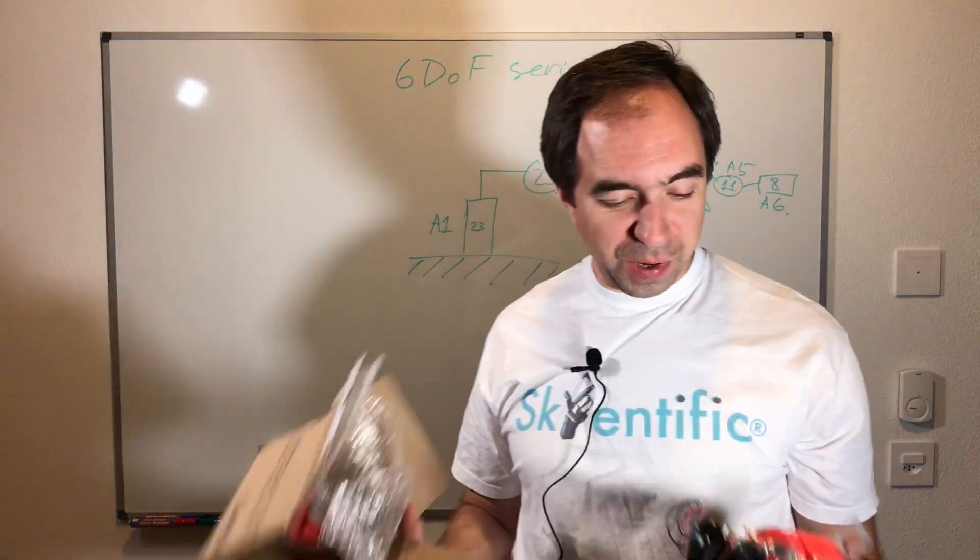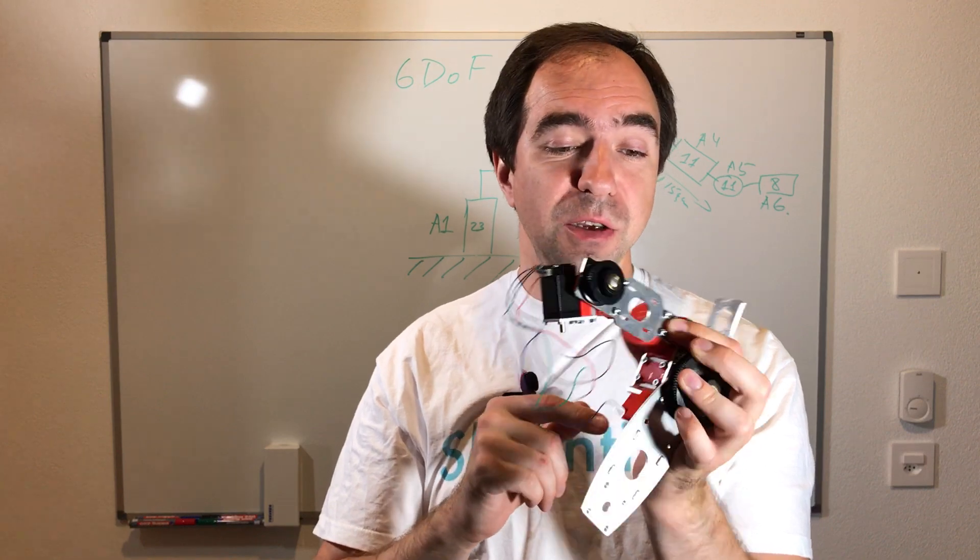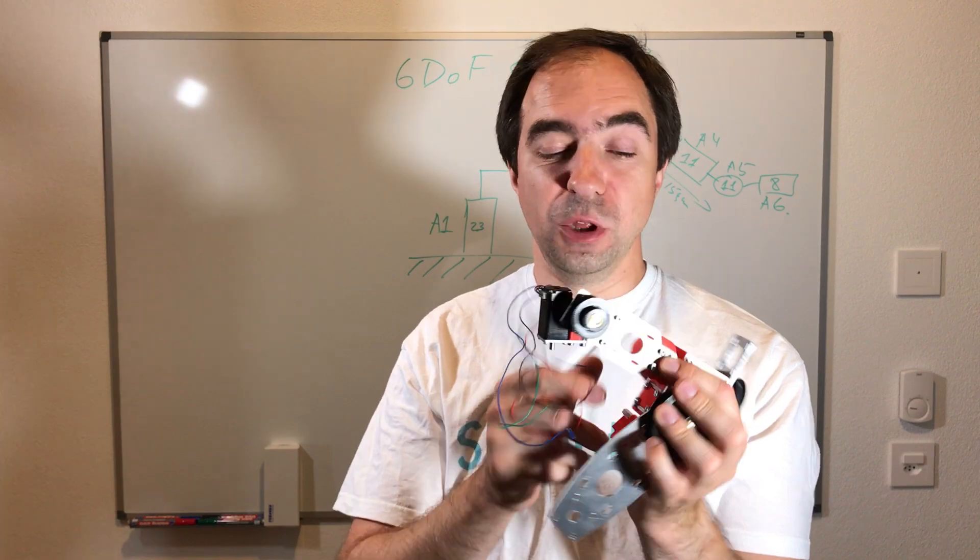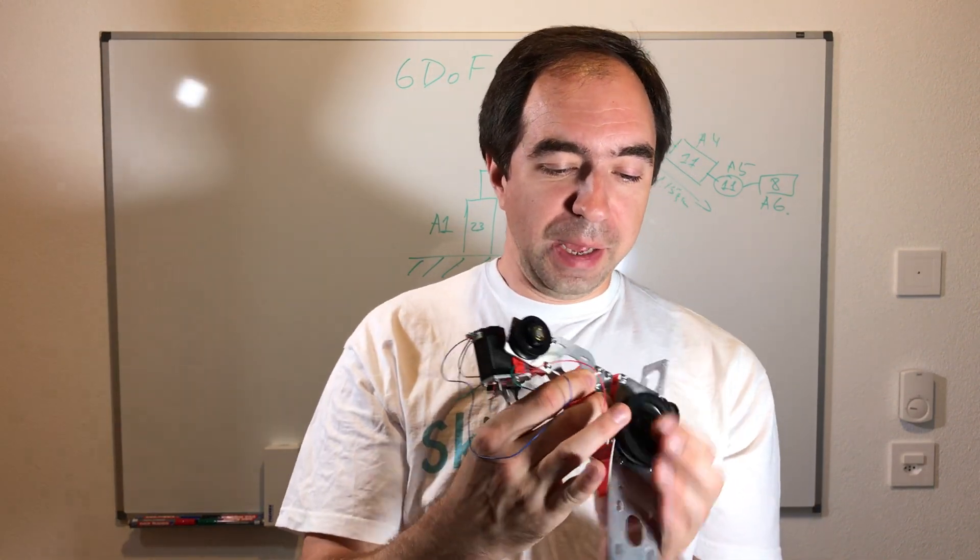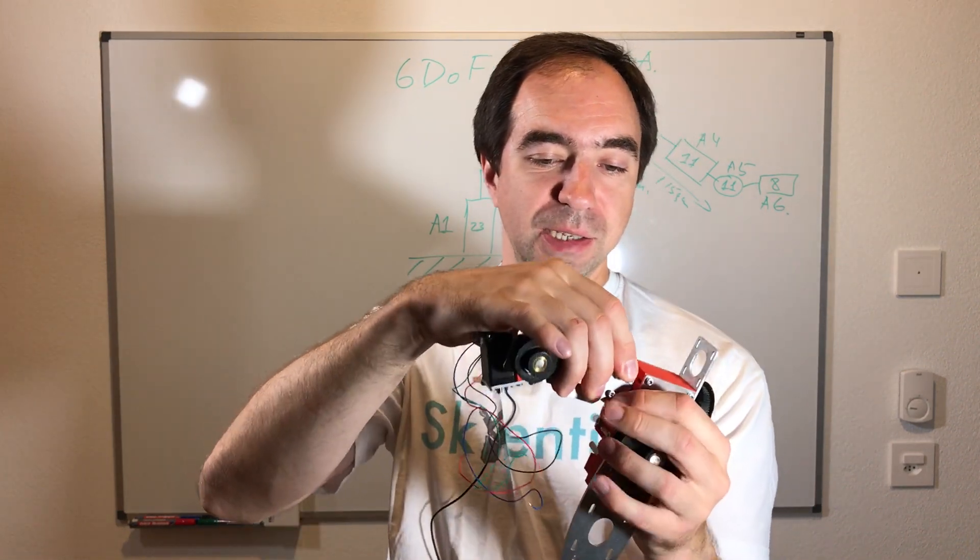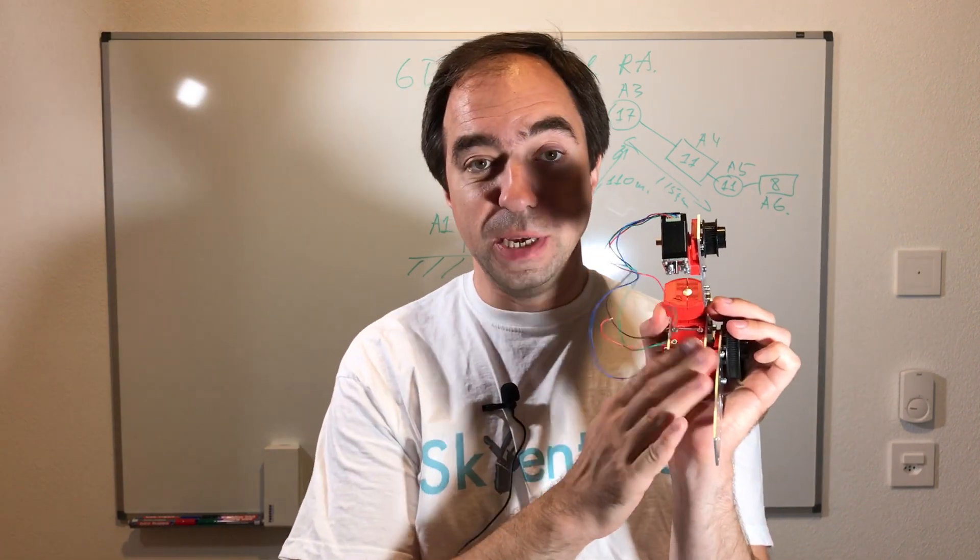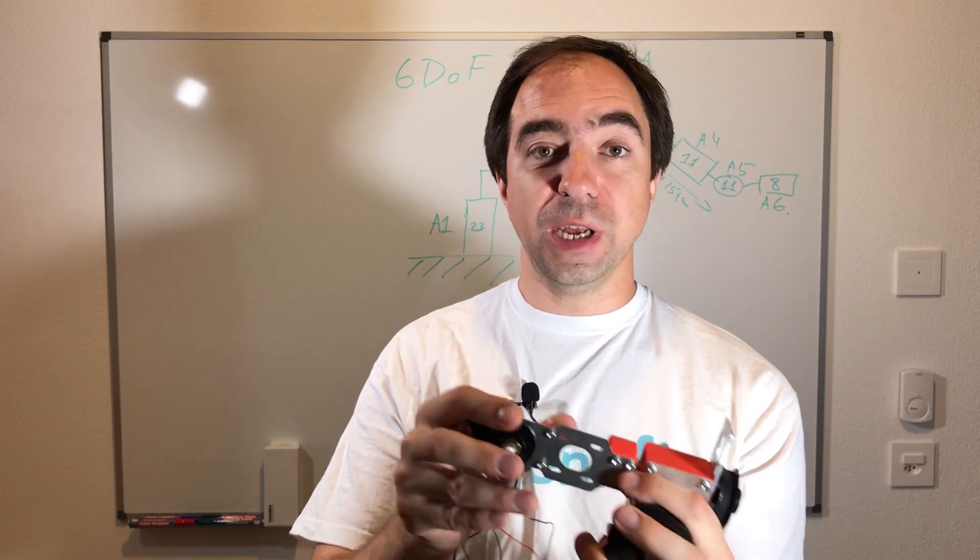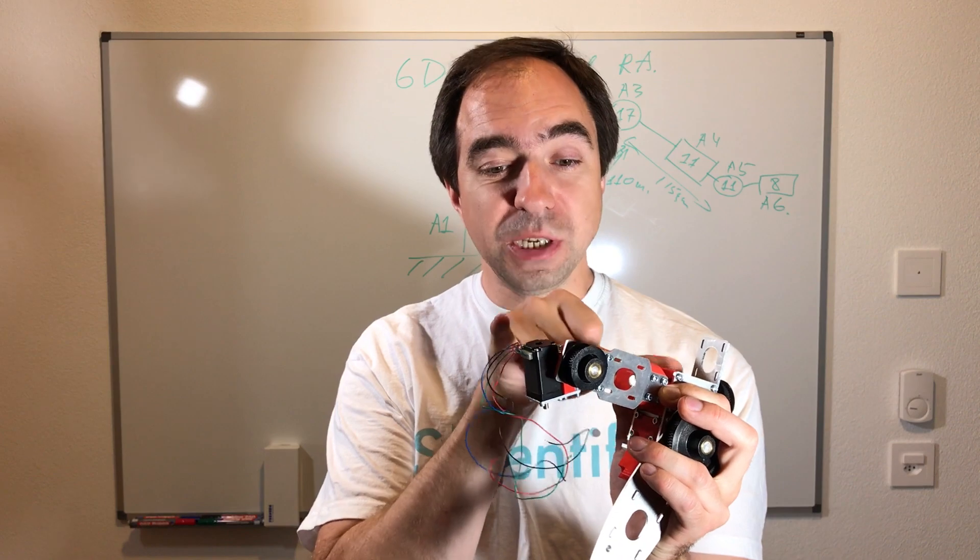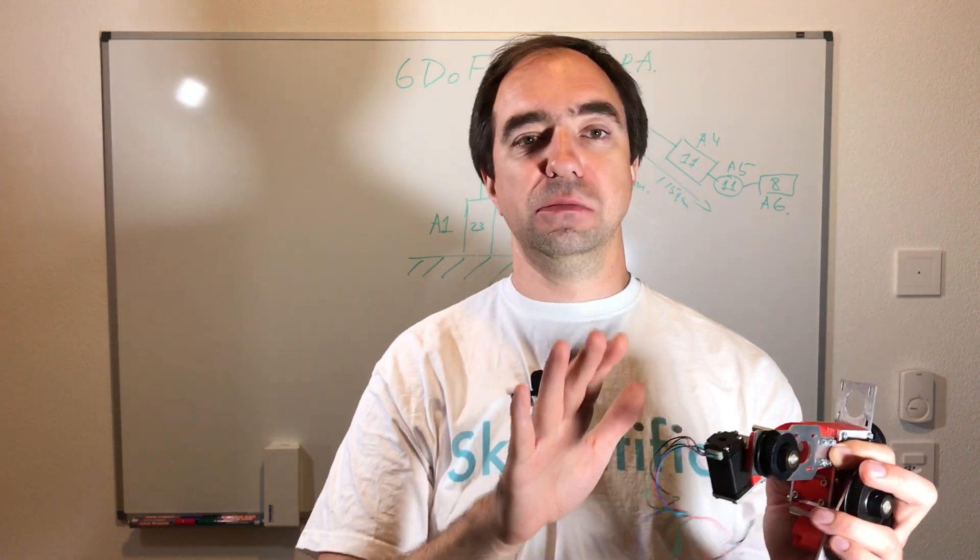Here I have the parts from the last year prototype, the first prototype. As you can see, this prototype was made from laser-cut aluminum parts and 3D printed parts and it has a lot of screws, a lot of metallic parts, and it's kind of heavy. In the current prototype I used carbon fiber plates instead of aluminum plates, and also for axis 4, 5, and 6, I use only 3D printed parts, so it's lighter.